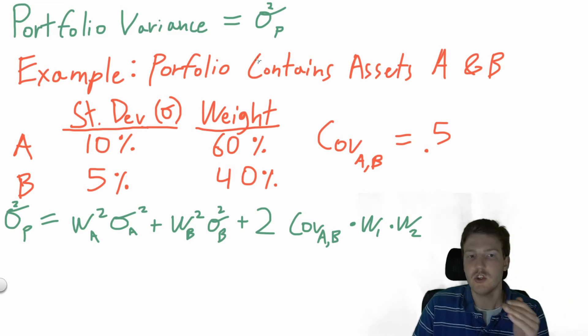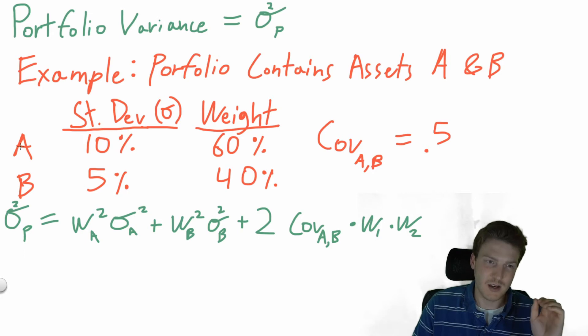So here's an example: portfolio contains assets A and B. Asset A has a standard deviation of 10% and a weight of 60%. Asset B has a standard deviation of 5% and a weight of 40%. The covariance between A and B is 0.5. Now this is probably a formula you're going to want to memorize if you're taking any sort of quiz or test on modern portfolio theory.